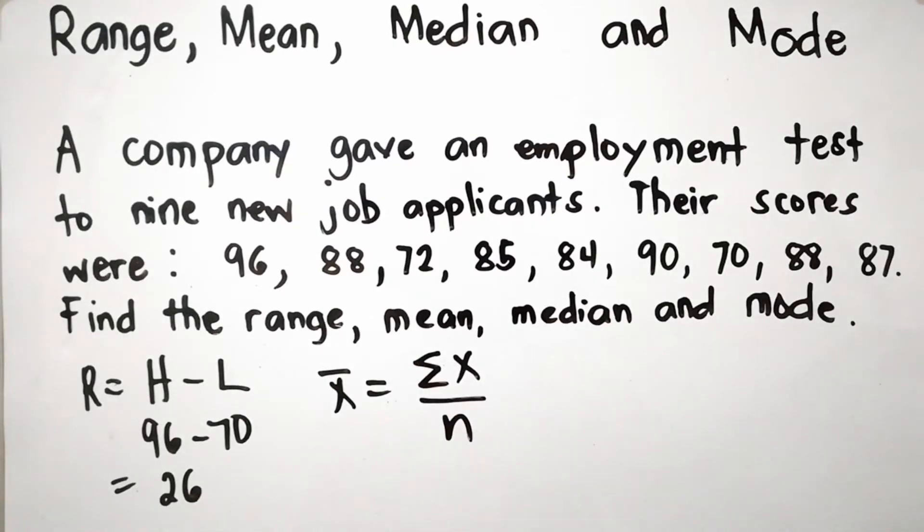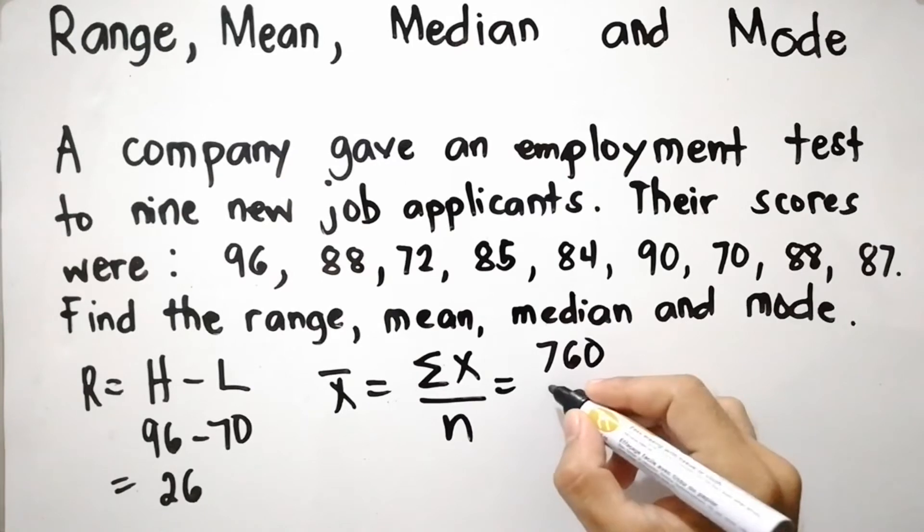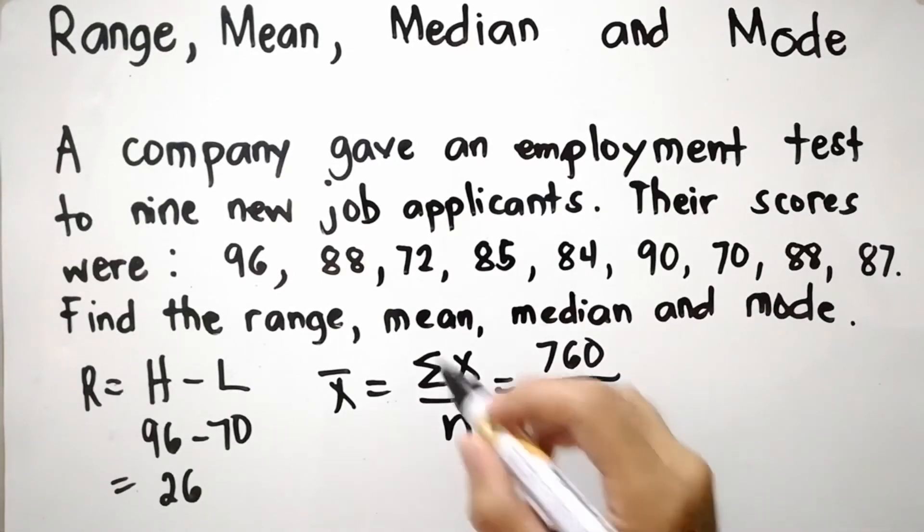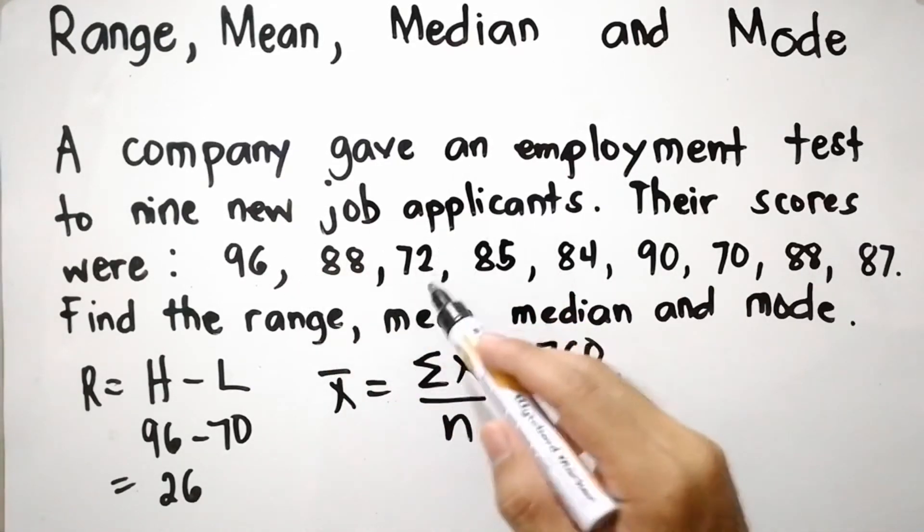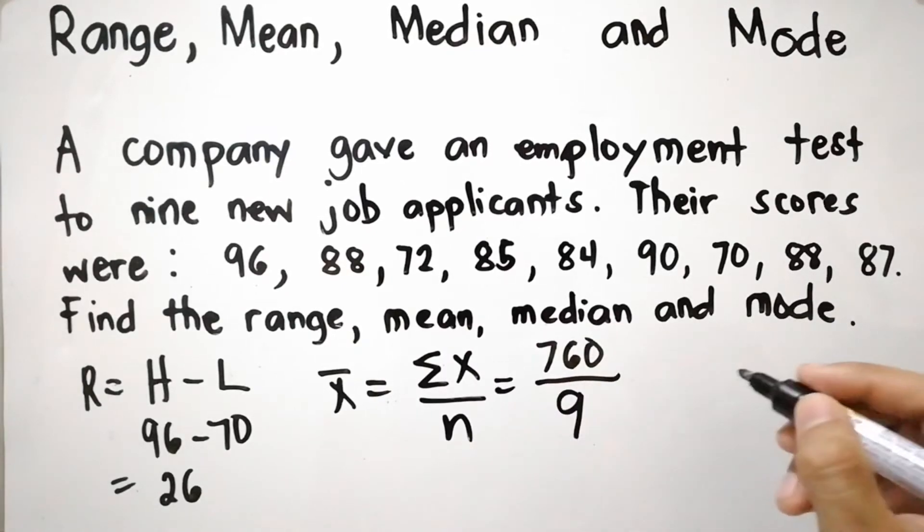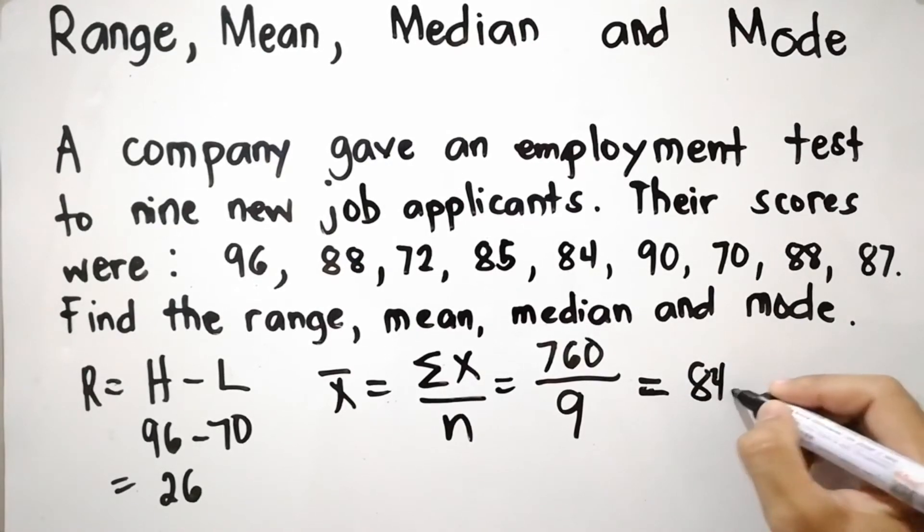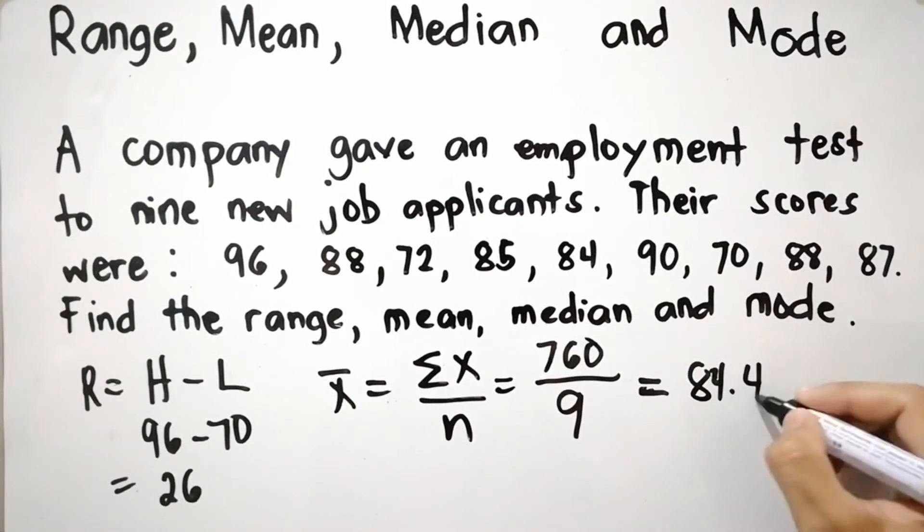So the summation of X is 760, divided by N. N is the number of scores, 1, 2, 3, 4, 5, 6, 7, 8, 9, so divided by 9. So that is equal to 84.44.